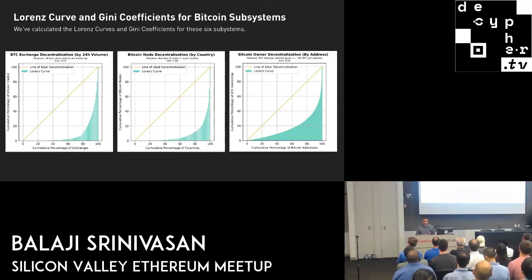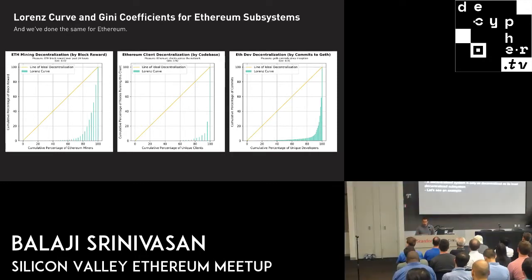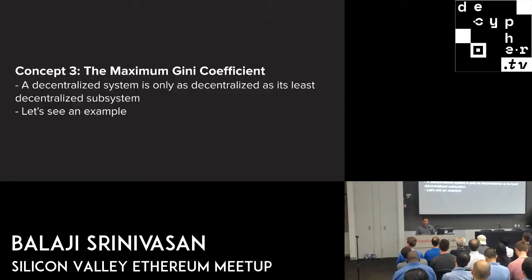We can calculate these curves also for Ethereum: mining decentralization over a 24-hour period, client decentralization, dev decentralization — the top two people in Geth have actually contributed a very large percentage of the code — exchange decentralization by volume across exchanges, node decentralization across countries, and owner decentralization. This gives some sense of, given this choice of subsystems and metrics, how centralized they are.